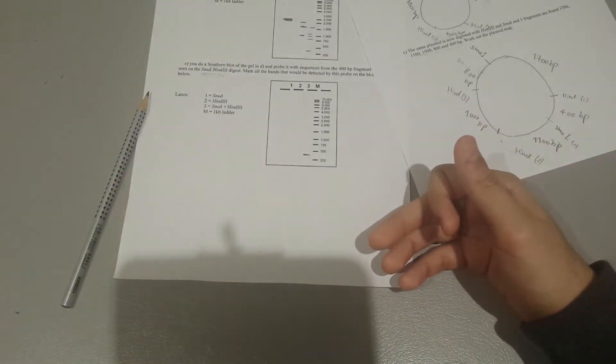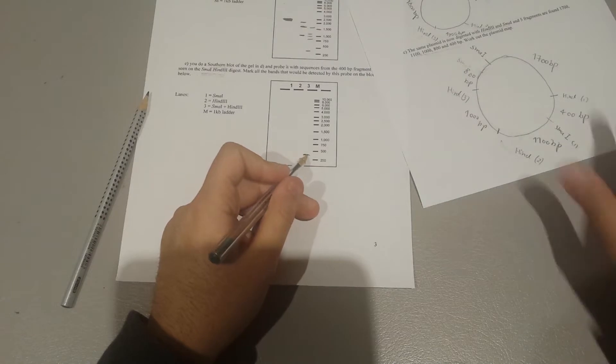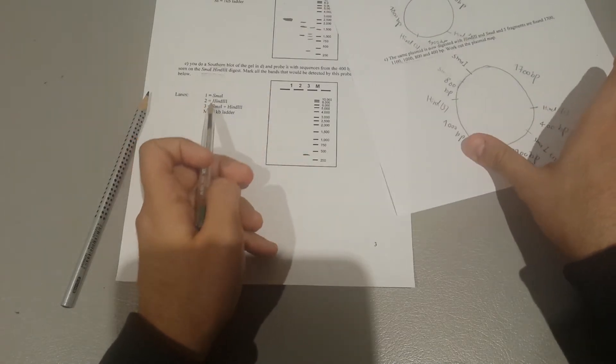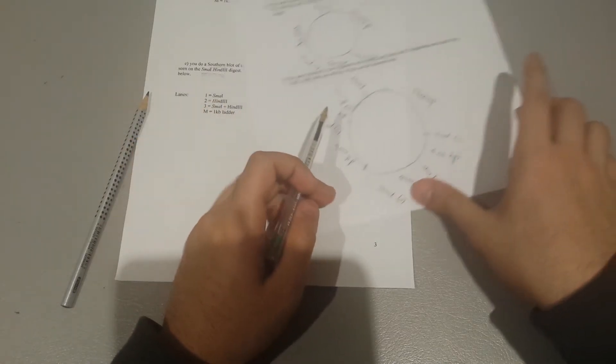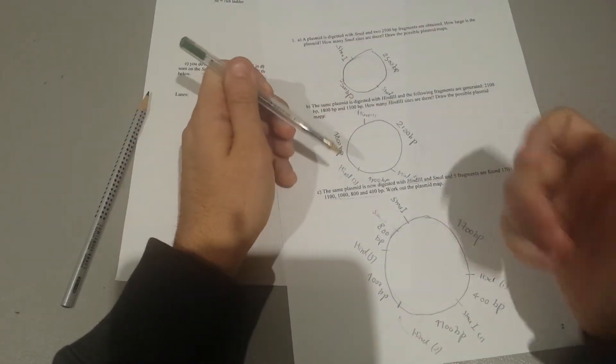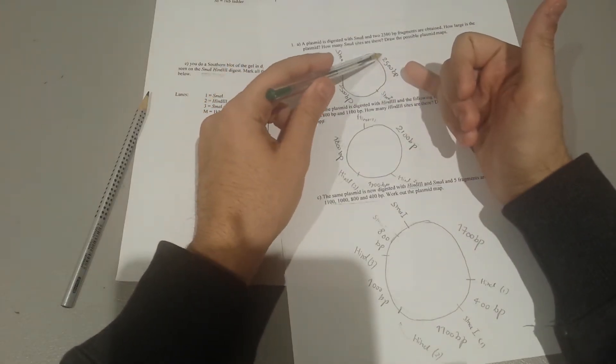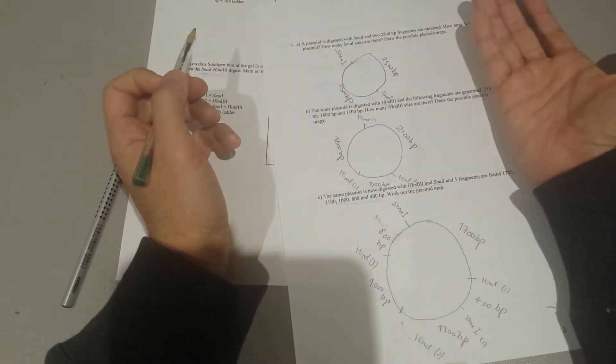Okay, that probe would identify, would fluoresce in a way that tells you okay, your probe binds there. But you've done the other two as well, so you have to match the 400 specifically into the other ones as well. For example, 400 in this one is in a bigger fragment of 2500 base pairs, isn't it?